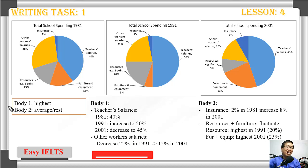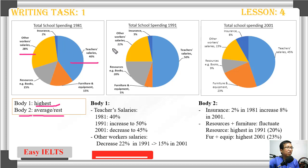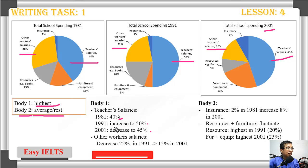Now we go into the layout for body one and body two. There are a lot of ways to lay out the body paragraphs, but in this lesson, in body one we talk about the highest, and in body two we talk about the average, the lowest, and the rest. So body one talks about teacher salary and other workers' salary because they are the highest.